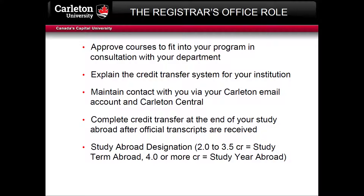The Study Abroad designation is for undergraduate students who successfully complete enough credits at a non-Canadian university under a recognized international exchange program. Earning 2.0 to 3.5 credits will give students the notation 'study term abroad' on their official transcript and diploma. Earning 4.0 or more credits will give students the notation 'study year abroad' instead. Earning 1.5 credits or less will not earn this designation, so keep in mind that courses that are withdrawn or failed are not included in this count.